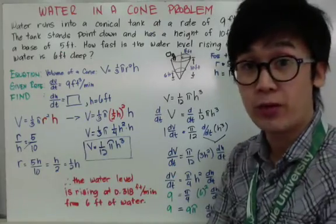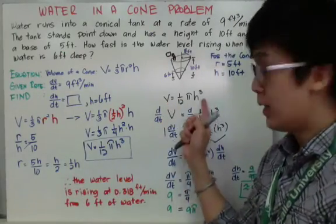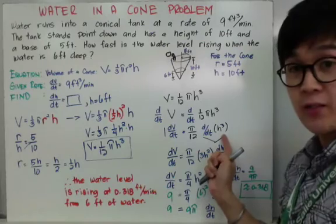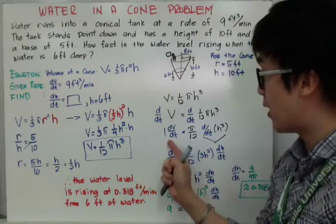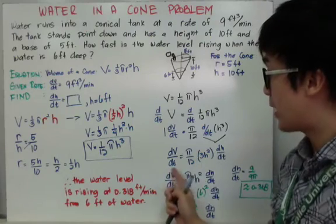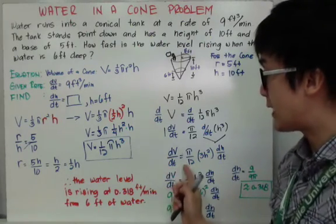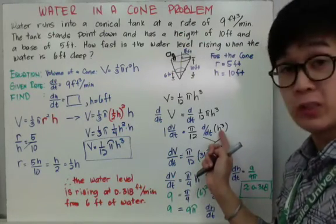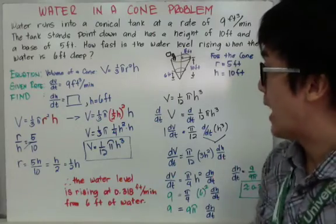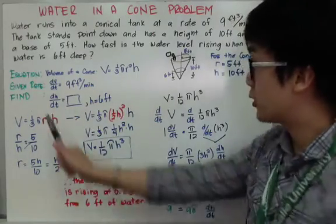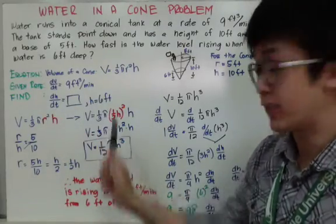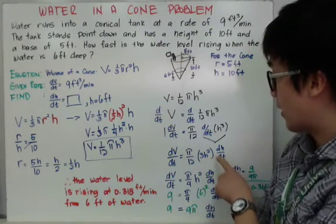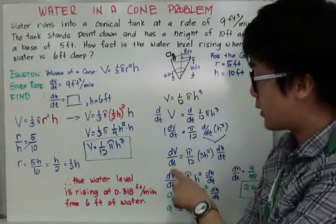Now I'm ready to take the derivative of both sides. Setting aside the constant, taking the derivative of h cubed with respect to time using implicit differentiation: dV/dt equals pi over 12 times 3h squared times dh/dt. By the substitution method, I can find dh/dt at h equals 6 feet. Plugging in h equals 6 and replacing dV/dt with 9 cubic feet per minute, I can use algebra to solve for dh/dt.